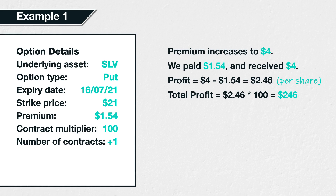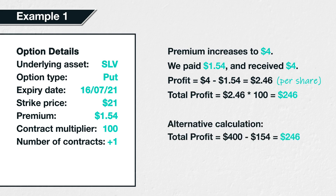When we say we bought the put for $1.54, that is per share. For one option contract, which represents 100 shares, that brings the total purchase price to $154. Similarly, when we sell the contract for a price of $4, that is $4 per share. For 100 shares, that is $400 in total. It's relatively simple to see that if we bought something for $154 and then sold it for $400, we made a profit of $246, which is calculated as $400 minus $154. As we've closed the position early, all that matters is the price of our opening and closing orders. The price of SLV at expiry is no longer important to us, as our position is now closed. This is true for all option positions that you completely close early — your profit is calculated as the price you sold the option for, minus the price you bought it for.